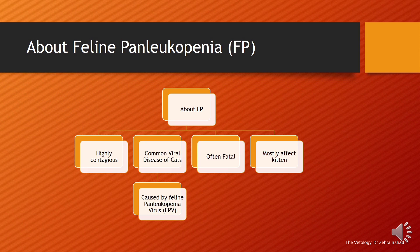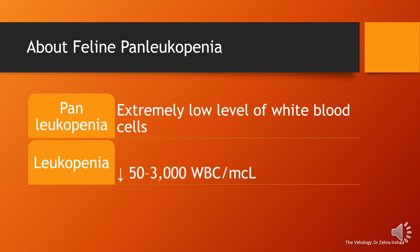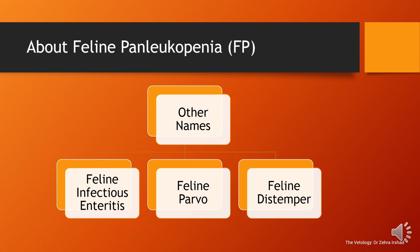Feline panleukopenia is a highly contagious, common viral disease of cats that is often fatal. It mostly affects kittens and is caused by feline panleukopenia virus (FPV). Panleukopenia signifies an extremely low level of white blood cells — below 50 to 3,000 WBCs per microliter of blood. It is also known as feline infectious enteritis, feline parvo, and feline distemper.